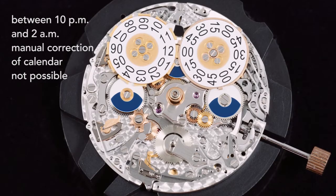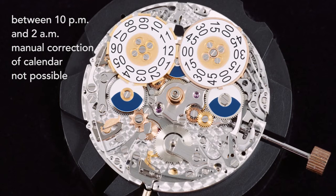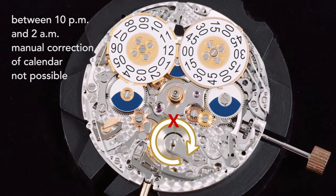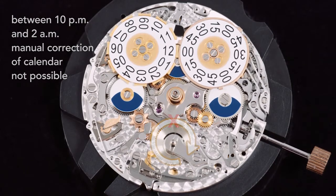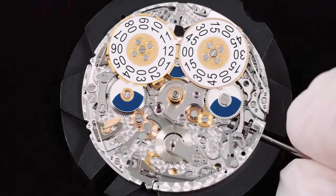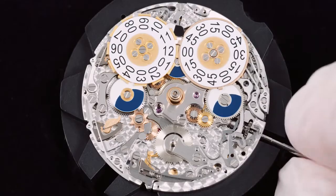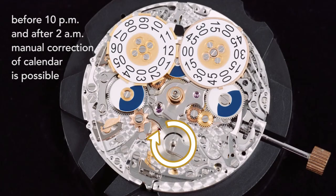Another blocking slide prohibits manual correction of the calendar while the calendar is in its normal mode of change between the hours of 10 p.m. and 2 a.m. Otherwise, the mechanisms of both systems would be in conflict and jeopardize functionality.